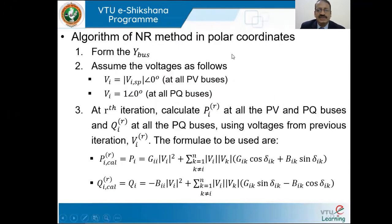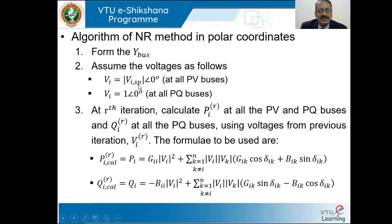The algorithm for the NR method in polar coordinates has various algorithmic steps as indicated below. To begin with, we need to form the Y-bus for the given system and assume voltages for various buses. For all PV buses, the voltages need to be specified: VI is equal to VI specified, with a specified magnitude of voltage at angle 0. Then VI is equal to 1 at angle 0 at all PQ buses.